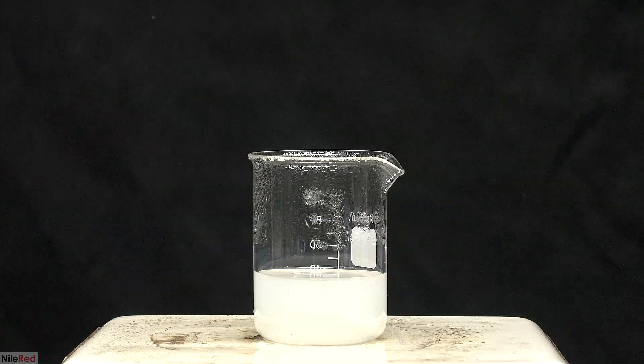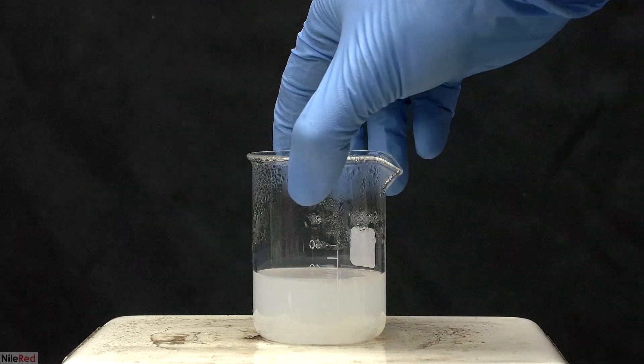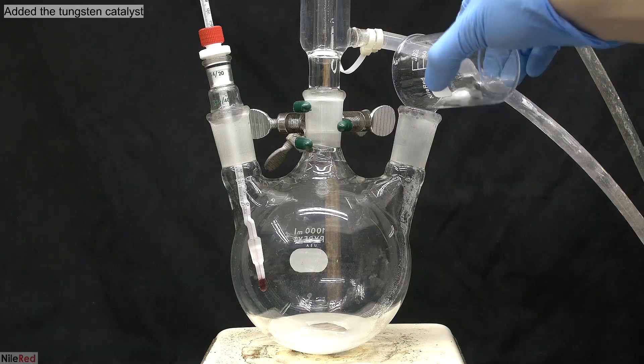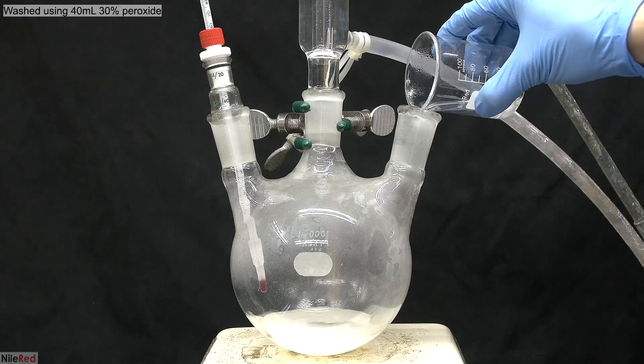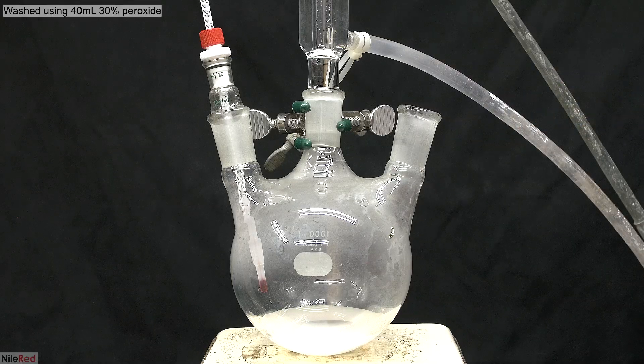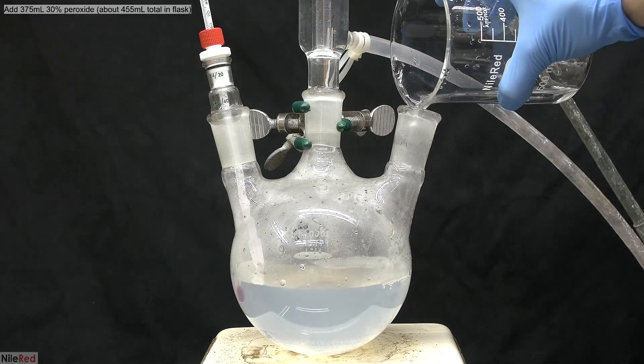The reaction is done when it doesn't look like there's any tungsten left. My solution here is murky, and in theory it should be perfectly clear, but I think my tungsten metal wasn't very pure. I quickly set up the reaction flask, and I added the catalyst to it. I washed the beaker with a decent amount of hydrogen peroxide, and I transfer this to the flask as well. With the catalyst in the flask, I then top it off with a bunch more peroxide.